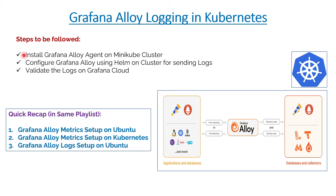Today we'll be installing a vanilla Grafana Alloy agent on a Minikube cluster — I have a single node cluster already spun up. We will configure Grafana Alloy using Helm to send pod-related logs to Grafana Cloud, and then finally we will view those logs in Grafana Cloud.